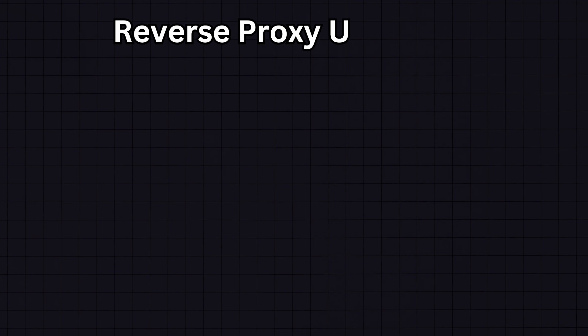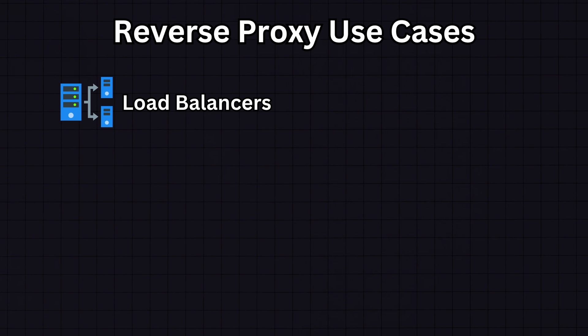Common use cases of reverse proxies include load balancers, which distribute incoming network traffic across multiple servers, ensuring no single server gets too much load. By distributing traffic, we prevent any single server from becoming a bottleneck, maintaining optimal service speed and reliability. CDNs are also a type of reverse proxy — they are a network of servers that deliver cached static content to users based on their geographical location, retrieving content from the origin server and caching it closer to the user for faster delivery.